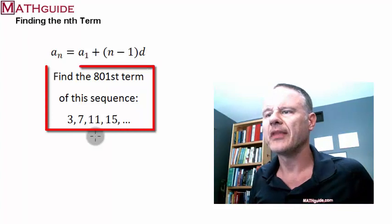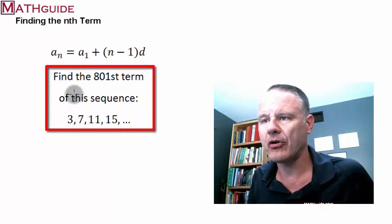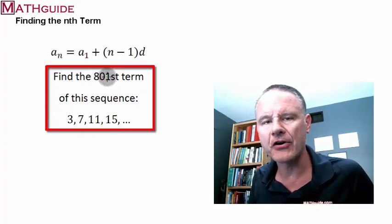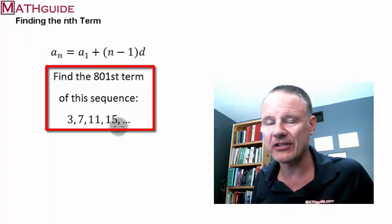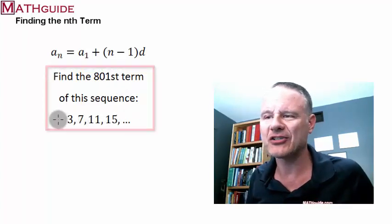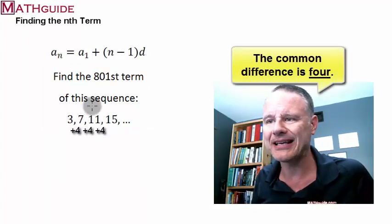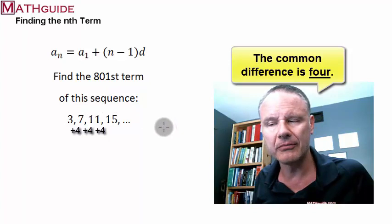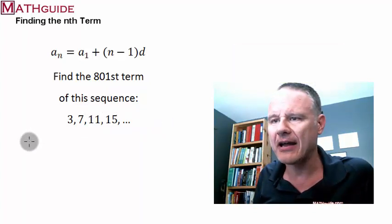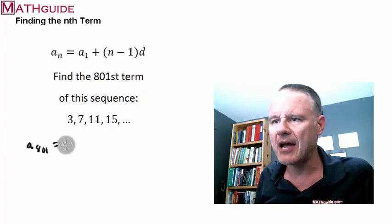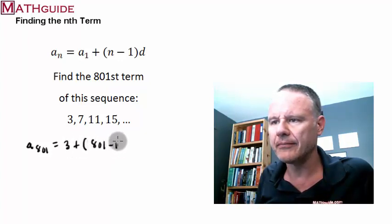So, let's do a problem. In this particular problem, we're going to find the 801st term of this arithmetic sequence. We know this is arithmetic because we saw the sequence a moment ago. We know the common difference is 4 because that's what it takes to add to go from one term to the next. So, if I want to find the 801st term, I'm going to take the first term. I'm going to replace n with 801. And we already know the common difference is 4.